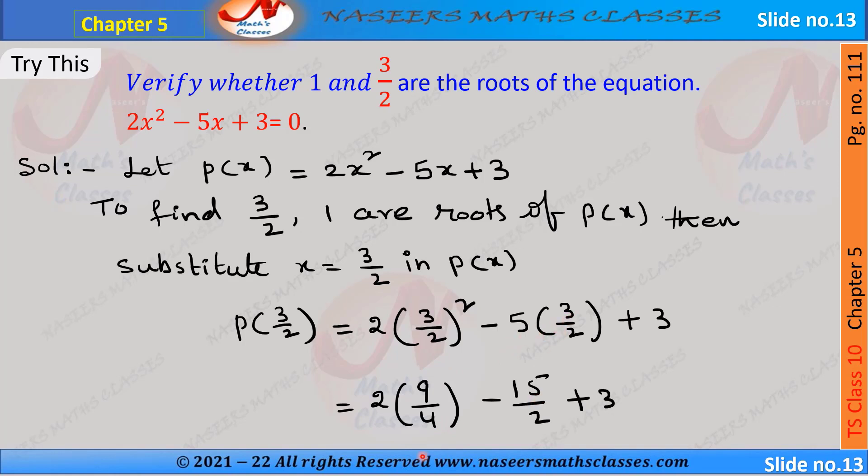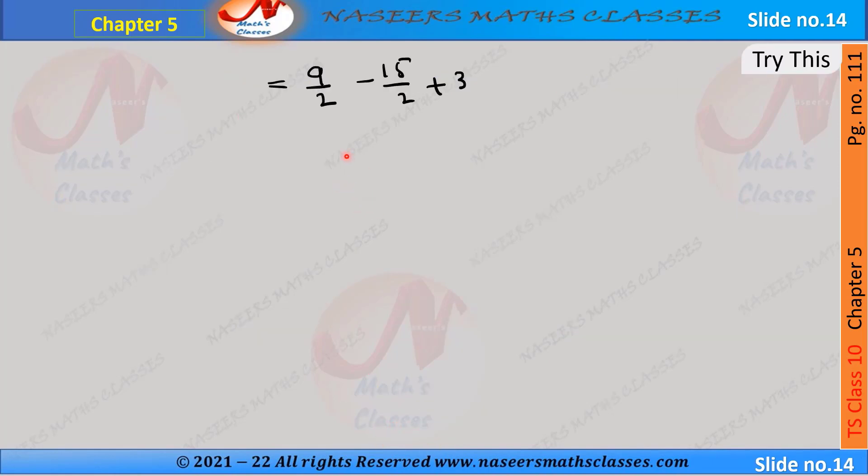So here we can cancel 2 ones are 2 into 2, 2s are 4. So next this can be written as 9/2 - 15/2 + 3. Next here denominators are same, so we take LCM as 2, then it can be written as (9 - 15)/2 + 3.